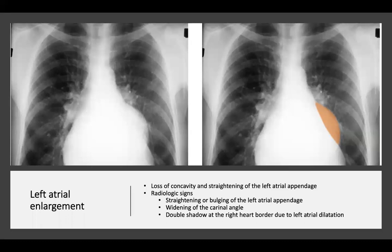That was an example of left atrial enlargement. The left atrium may be seen on a PA chest x-ray as the left atrial appendage, which is normally concave in shape. If the left atrium is enlarged, there is loss of concavity and straightening of the left atrial appendage, and sometimes it bulges outwards. Radiological signs include straightening or bulging of the left atrial appendage, widening of the carinal angle, and a double shadow at the right heart border. The images show the left atrial appendage bulging out with the right heart border appearing further to the right than usual, with the left atrial appendage marked in orange.